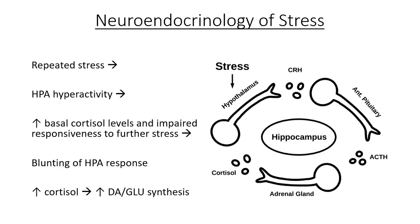Normally, stress is recognized by the paraventricular nucleus, or PVN, of the hypothalamus. This results in the release of corticotropin-releasing hormone, or CRH, which stimulates the adrenal gland to synthesize and release cortisol. Cortisol is our stress hormone and functions to mobilize energy sources and mediate the sympathetic and parasympathetic nervous systems in an adaptive response to stress. Cortisol feeds back onto the hypothalamus, anterior pituitary, adrenal gland, and hippocampus.